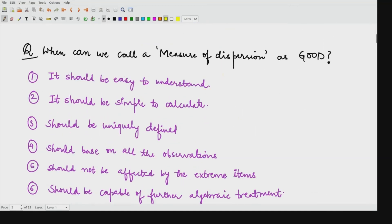When can we call a measure to be a good measure of dispersion? First of all, it should be easy to understand, it should be simple to calculate, it should be uniquely defined. That means it should not produce two or more answers. It should base upon all the observations, should not be affected by extreme values.